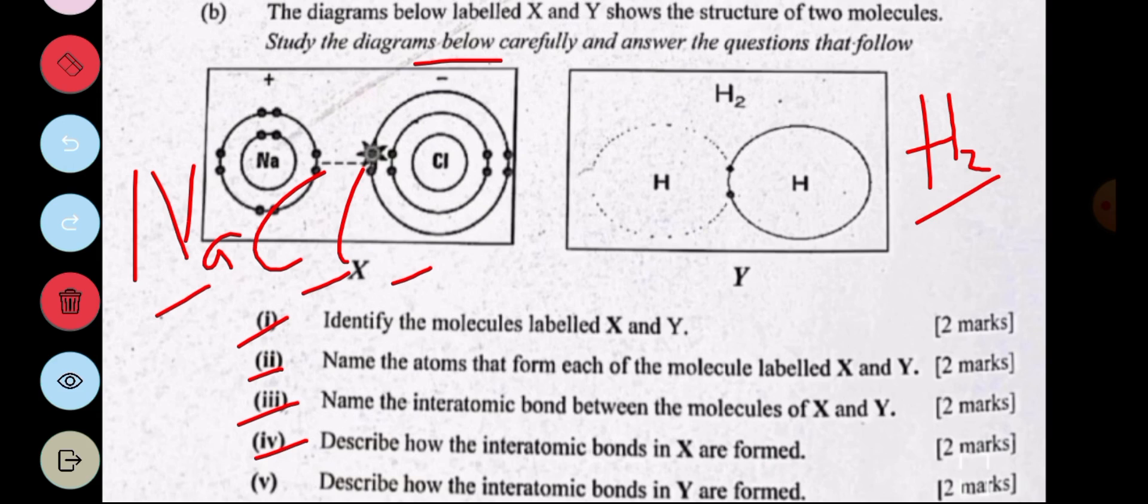After the bond is formed, both of the atoms will now have a stable electron configuration. That is, the outermost shell fully filled.